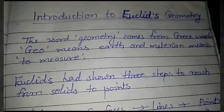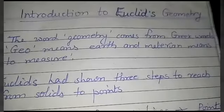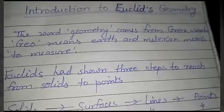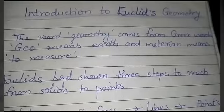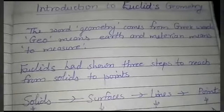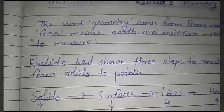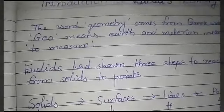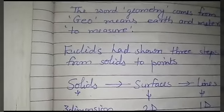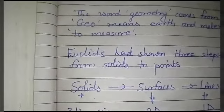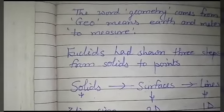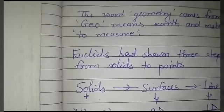Today's new chapter for Class 9 is Euclid's Geometry. The word geometry comes from the Greek words: 'geo' meaning earth and 'metron' meaning to measure. It appears that the word geometry originated from the need to measure land in ancient times.